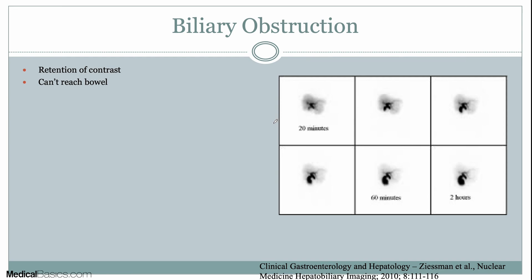The final example is biliary obstruction. If you notice, there's uptake within the liver, uptake within the bile ducts, and uptake within the gallbladder, but it just stops — no uptake in the bowel at all. No matter how long you wait — in this case they waited two hours — you still see no bowel uptake, just the same uptake seen early on. This is biliary obstruction. If there's an obstruction, likely of the CBD in this case, no tracer goes into the bowel. There can be high or low obstructions; depending on the level, you may or may not see gallbladder uptake, but you should definitely not see any bowel uptake with a biliary obstruction.